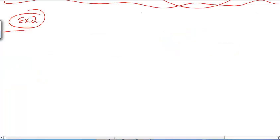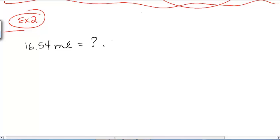Let's say that we have 16.54 milliliters. And wouldn't it be nice to know what that was in another volume unit, like, say, kilometers cubed? That's a good volume unit. Let's figure that out.